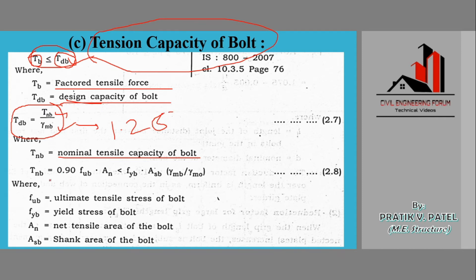For calculating the nominal tensile capacity of the bolt, we use the formula: Tnb = minimum of (0.9 × fu × Anb) and (fy × Asb × γmb / γm0). By using this formula for Tnb and dividing it by γmb (which is 1.25), we can obtain the design tension capacity of the bolt.